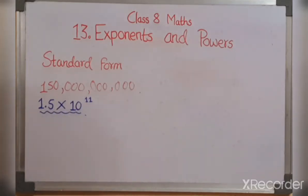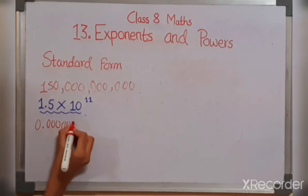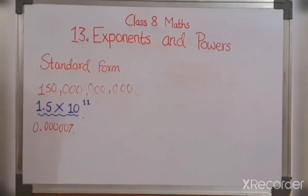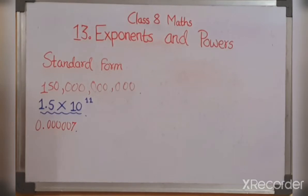Now let us try to express this number that is 0.00000035. So we need to express this in standard form. So let's see how we can do it.